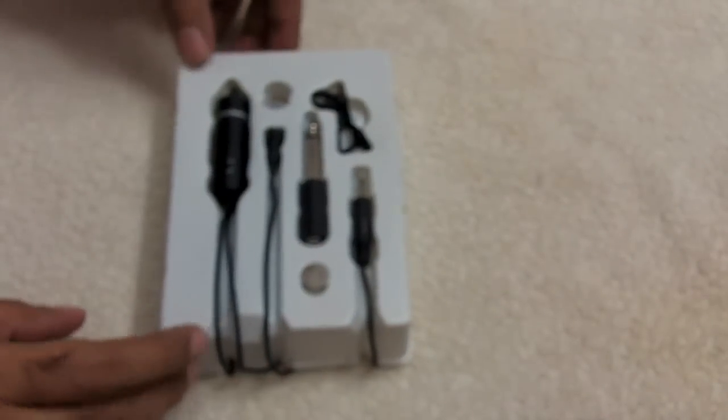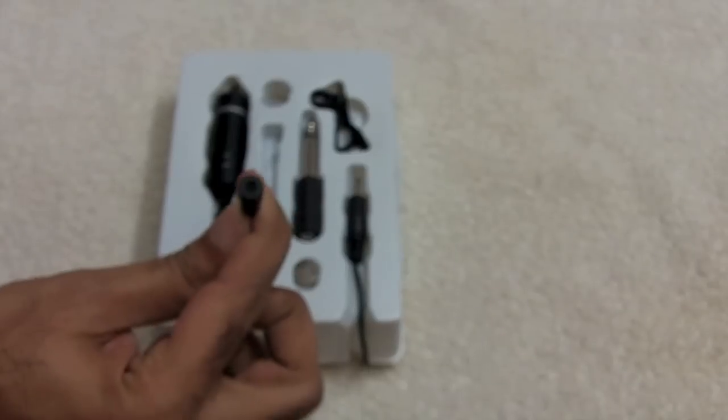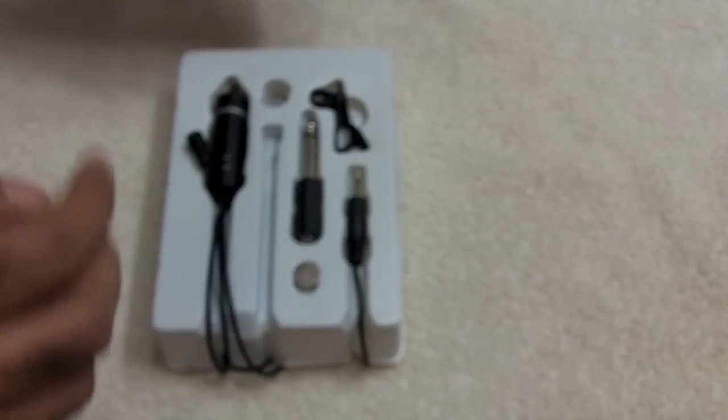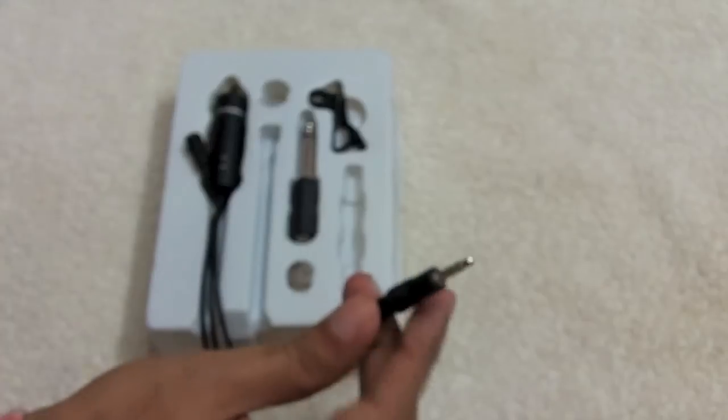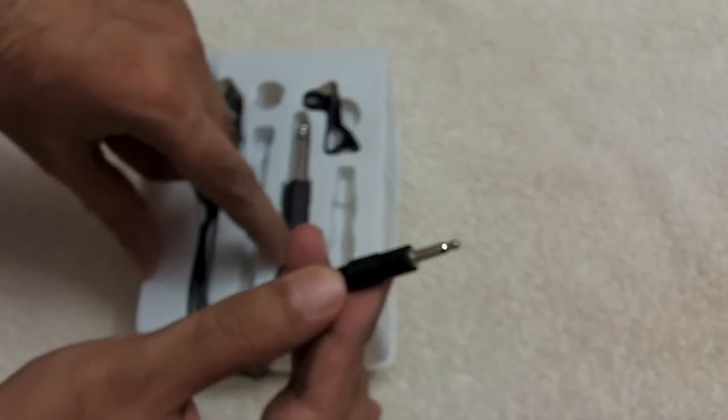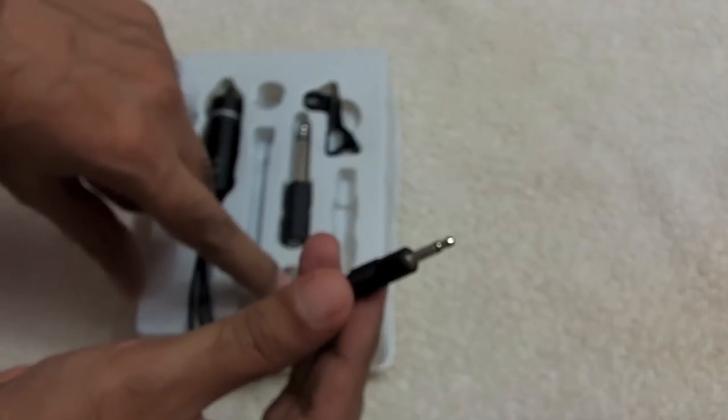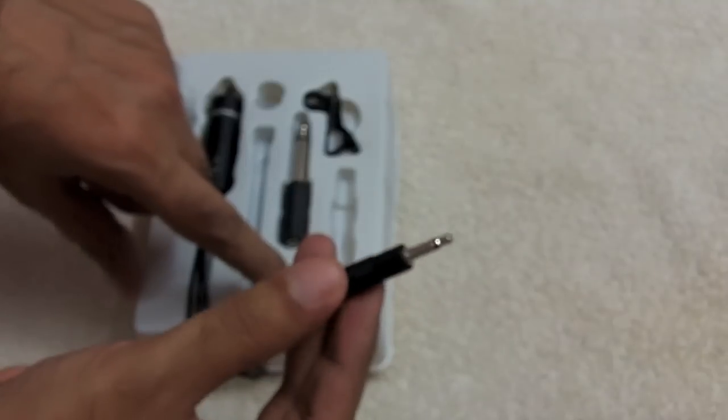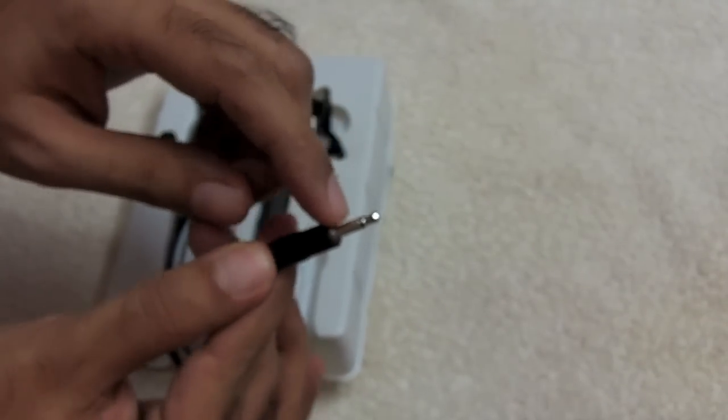So this is the mic. I guess this small thing is the mic. See how tiny it is. This is the mic. It's got one cell. This is the 3.5mm jack that's going to go inside the camera mic input.